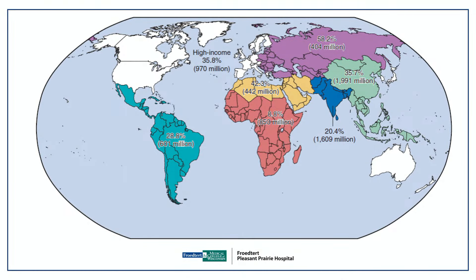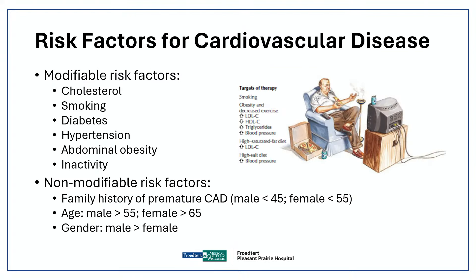In Western Europe, the US, and Canada, about 35.8% — 970 million people — die from heart disease. In Africa it's about 8.8%, but they still deal with infectious diseases like malaria, so they have less cardiovascular disease. In high-income countries like the US, Australia, and Japan, cardiovascular disease dominates.